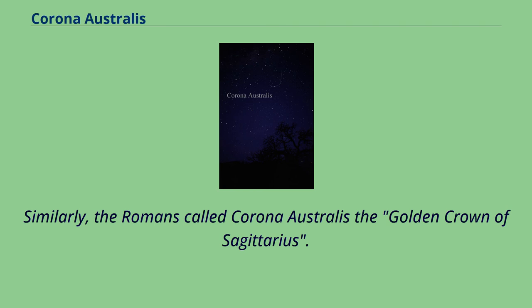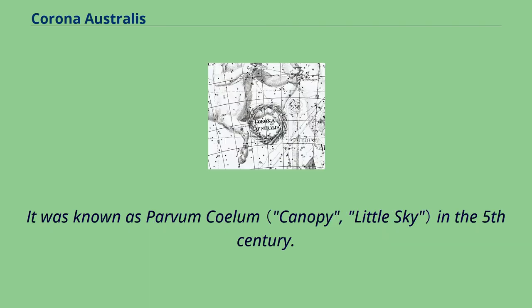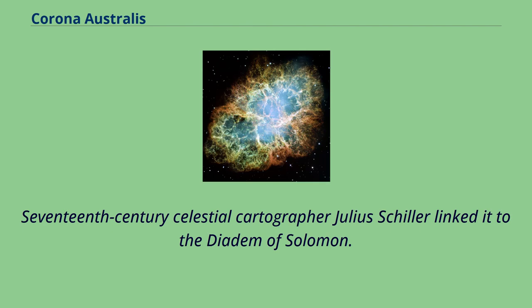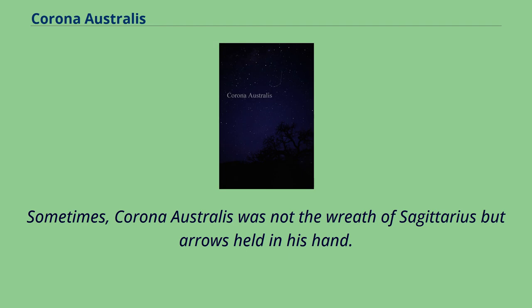It was known as Parvum Coelum in the 5th century. The 18th century French astronomer Jérôme Lalande gave it the names Sertum Australe and Orbiculus Capitis, while German poet and author Philippus Caesius called it Corolla or Spira Australis, and linked it with the crown of eternal life from the New Testament. 17th century celestial cartographer Julius Schiller linked it to the diadem of Solomon. Sometimes, Corona Australis was not the wreath of Sagittarius but arrows held in his hand.